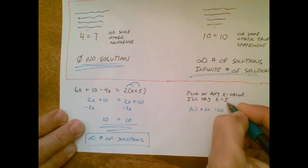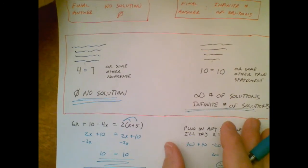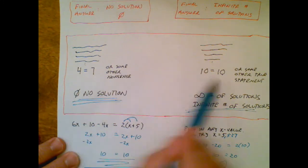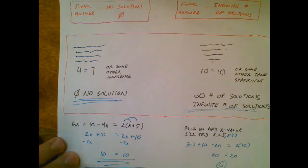30 plus 10 minus 20, math checks out. Just pulling an x equals 5 made this work. If I pulled out an x equal 5527 and plug that in, it would also make that equation work. So no freaking out if when you're working on equations something weird happens at the end. You just say false, I'll go no solution. True, I'll go infinite number of solutions. See ya.